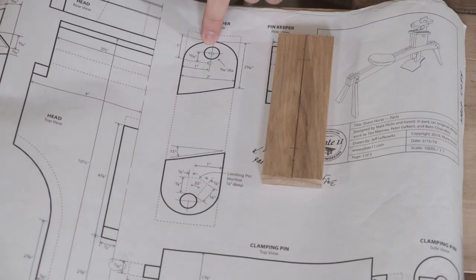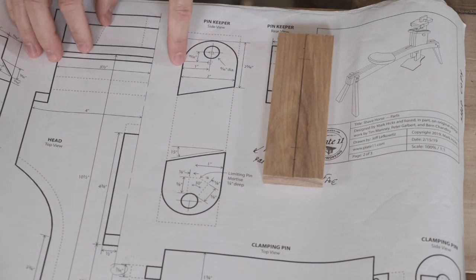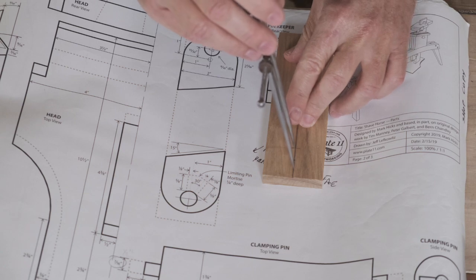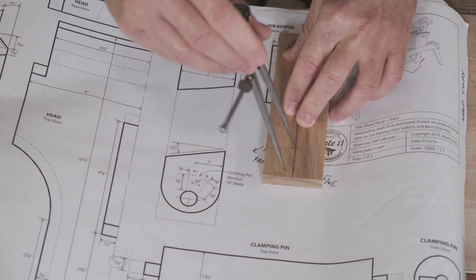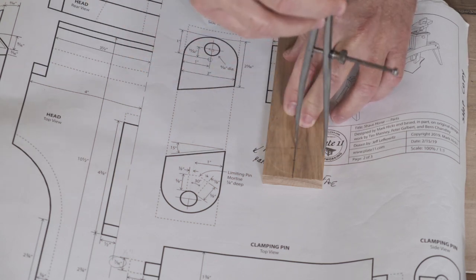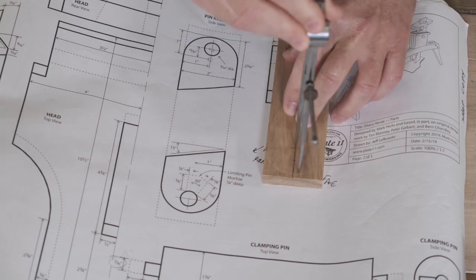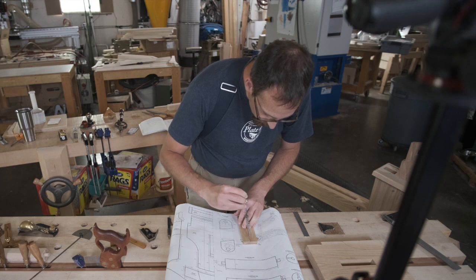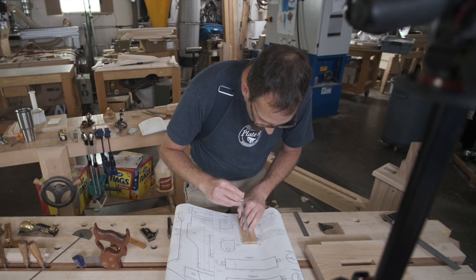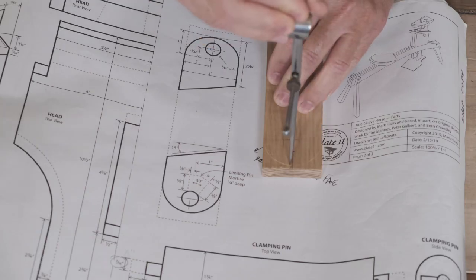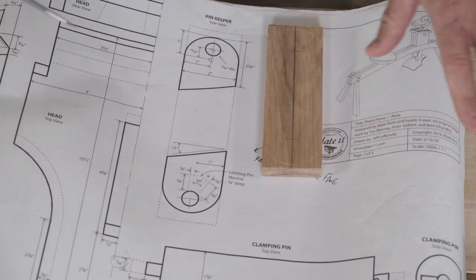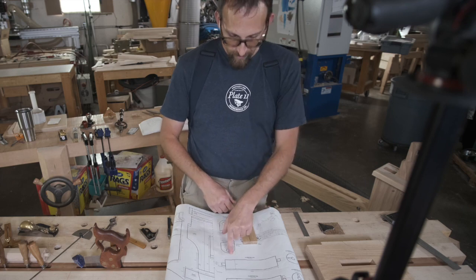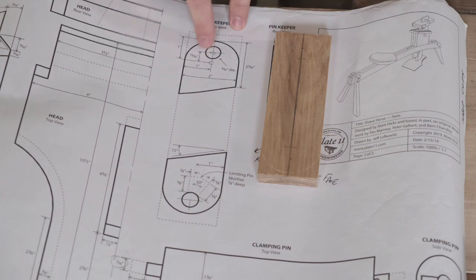I'm going to use my dividers set to an inch and swing the arc for the end. This is just a guide for the bandsaw. It doesn't have to be a perfect arc. I usually will rough cut this at the saw and then take a spoke shave and smooth the saw marks off. You're just wanting to remove material here so that when you clamp down on your parts, you don't end up clamping with the pinkeeper. You want the pin to be the thing that sticks out farthest past the pinkeeper.